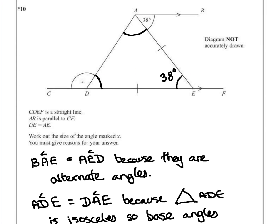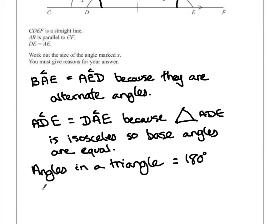So angle ADE is going to be equal to 180 degrees, subtract the 38 that we know, which is equal to 142 degrees. And then we're going to divide this by 2. Because both angles are equal, we know that if we half the remaining angle, that will give us our missing value. So half of 142 is 71.